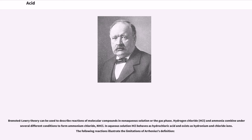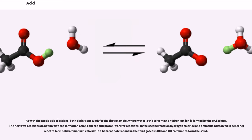In aqueous solution, HCl behaves as hydrochloric acid and exists as hydronium and chloride ions. The following reactions illustrate the limitations of Arrhenius' definition. As with the acetic acid reactions, both definitions work for the first example where water is the solvent and hydronium ion is formed by the HCl solute. The next two reactions do not involve the formation of ions but are still proton transfer reactions. In the second reaction, hydrogen chloride and ammonia dissolved in benzene react to form solid ammonium chloride in a benzene solvent, and in the third, gaseous HCl and NH3 combine to form the solid.